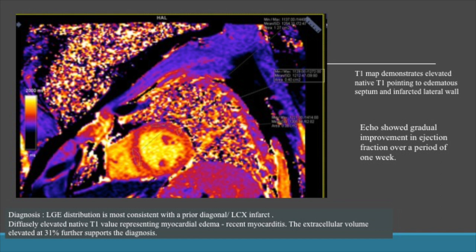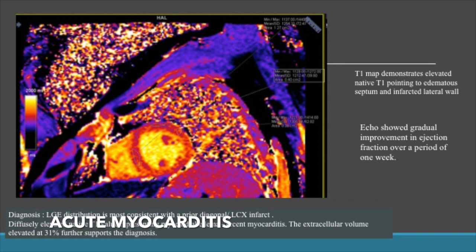Echo showed a gradual improvement in ejection fraction in this patient over a period of one week, which sealed the deal that he in fact had acute myocarditis. This case proves the point that T1 mapping can be used and is helpful to identify and establish diagnoses in patients with diagnostic dilemmas such as this one.